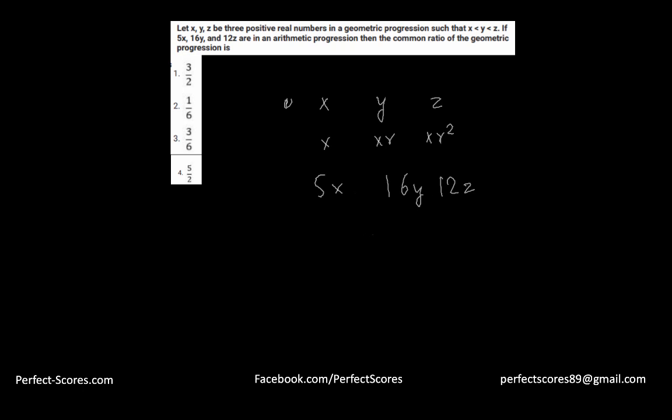So there's something that we know in arithmetic progression is that the average of numbers in arithmetic progression is equal to the first number plus the last number divided by 2, which is the middle number. Because the middle number is always the average in arithmetic progression. So from here we can say that 5x plus 12z divided by 2 is actually equal to 16y. So that's what we've used.